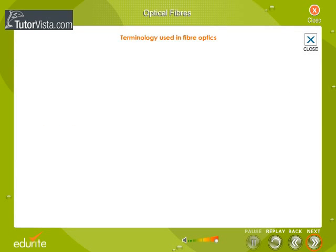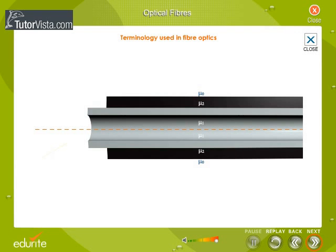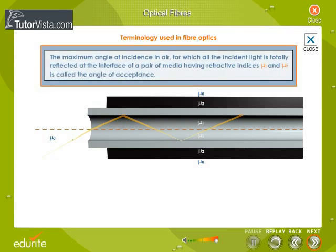Terminology used in fiber optics: Here you can see a ray of light traveling from air of refractive index mu0 into an optic fiber. The maximum angle of incidence in air for which all the incident light is totally reflected at the interface of a pair of media having refractive indices mu1 and mu2 is called the angle of acceptance.